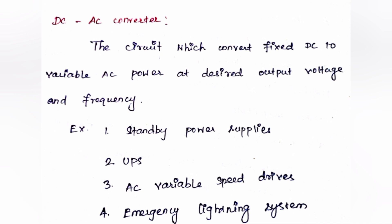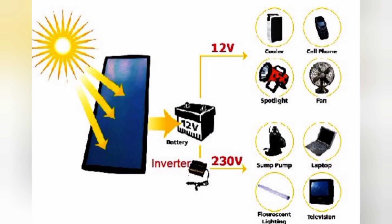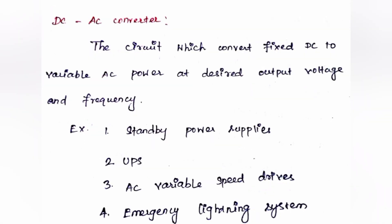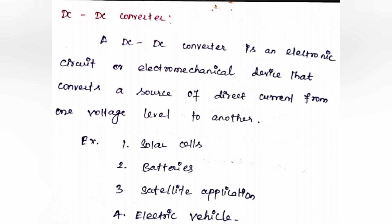DC to AC converter - Inverter. The circuit which converts fixed DC to variable AC power at desired output voltage and frequency. In AC systems, we consider mainly three parameters: voltage, current, and frequency. We require desired voltage as well as frequency. What are the applications that require DC to AC converters? Inverters are widely used in standby power supplies, UPS, AC variable speed drives, and emergency lighting systems.